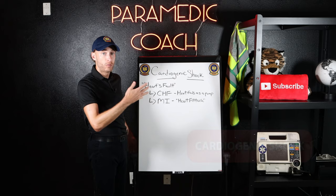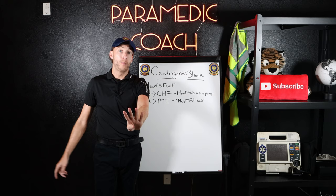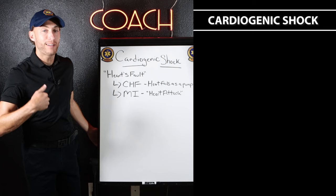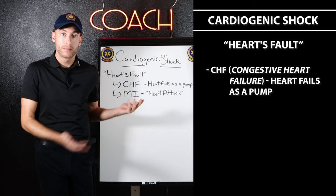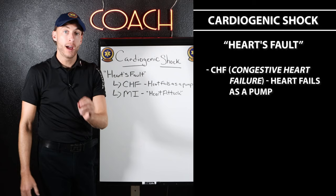The easiest way to understand cardiogenic shock: there are four types of shock, but there's one subtype we'll talk about later. Cardiogenic shock most commonly comes from heart failure like CHF. The heart is too weak — it literally fails as a pump. When CHF gets really bad, that can result in cardiogenic shock where your blood pressure goes way down — hypoperfusion because your heart fails as a pump.